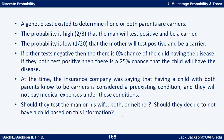At the time this happened, genetic testing existed to determine if one or both parents are carriers. The probability is high that the man will test positive as a carrier — two-thirds. The probability is low that the mother will test positive — one over 20. If either tests negative, there's a zero percent chance of the child having the disease. If they both test positive, then there's a 25% chance the child will have the disease.